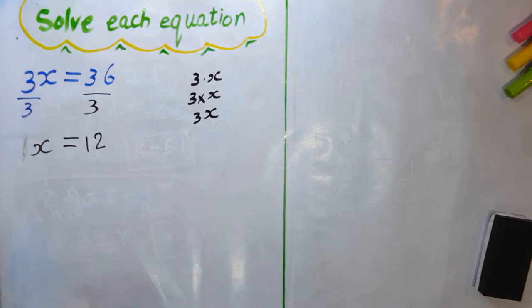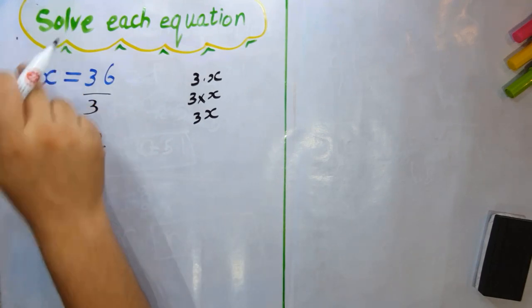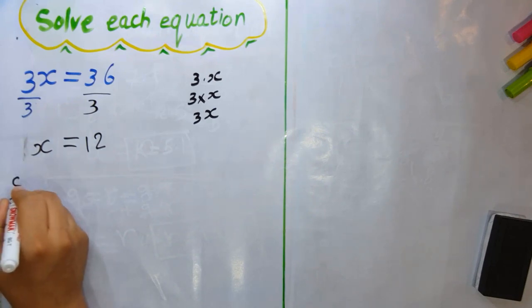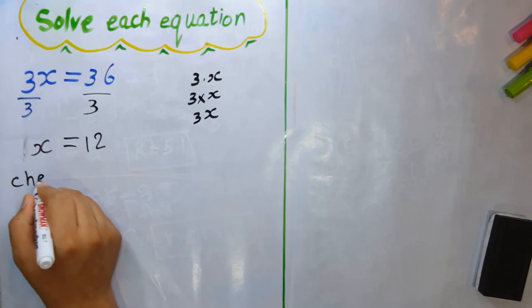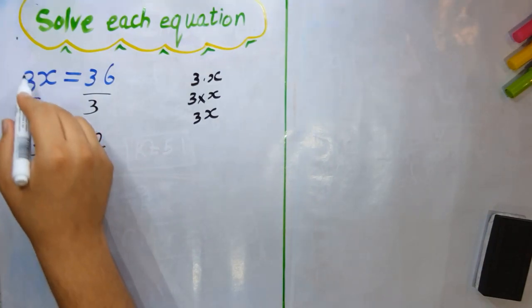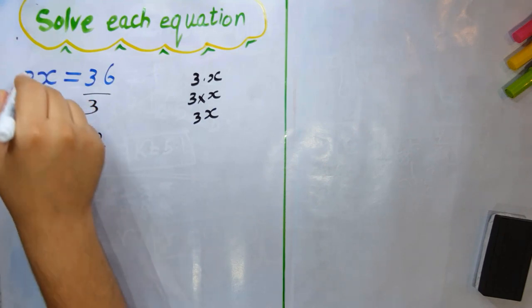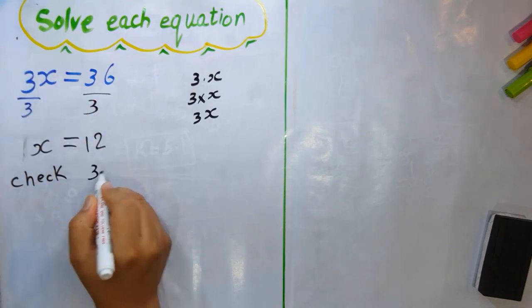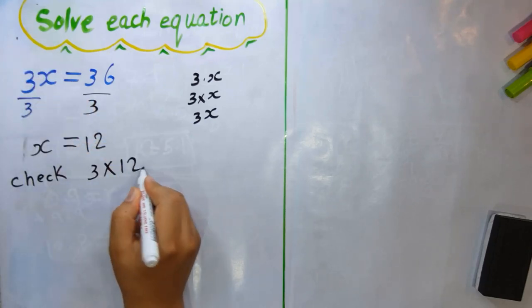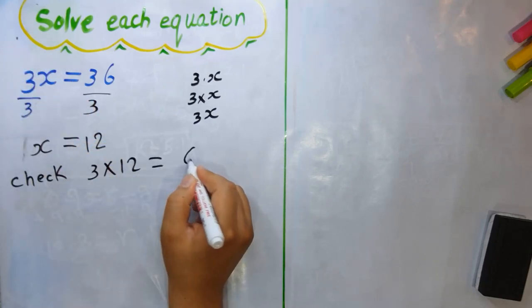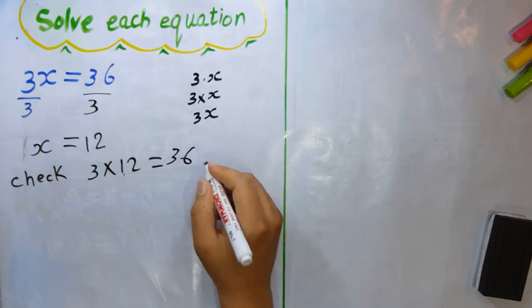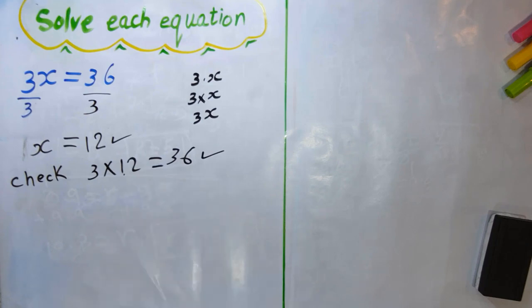To check your answer, substitute x = 12 into the equation. We get 3 multiplied by 12. Three times 2 is 6, three times 1 is 3, so 3 × 12 = 36 — correct! Your answer is correct.